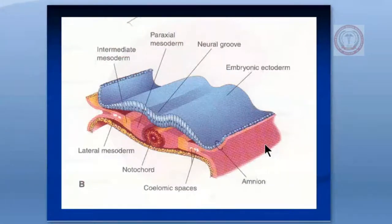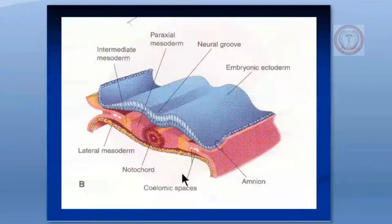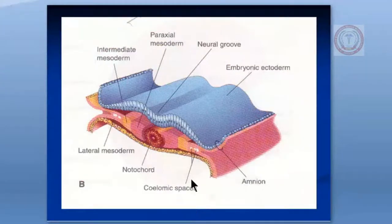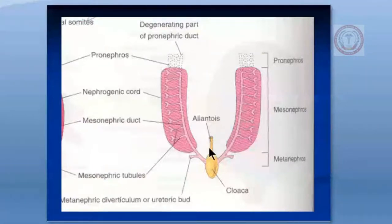The metanephros will develop into the permanent kidney. So: pronephros, mesonephros, and metanephros. This is the duct of the mesonephros, called the mesonephric duct, and distally it will open into the cloaca. The cloaca is a common endodermal chamber lying in the distal part of the embryo, and it will divide to form the urinary bladder and the rectum. The mesonephric duct is going down into the cloaca.